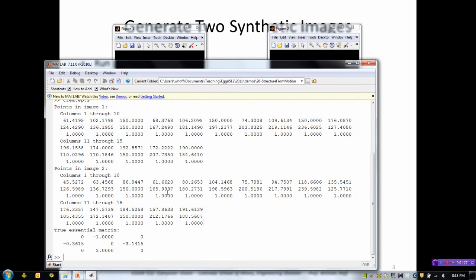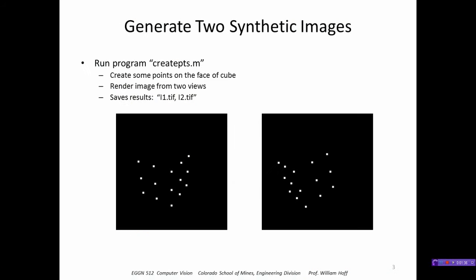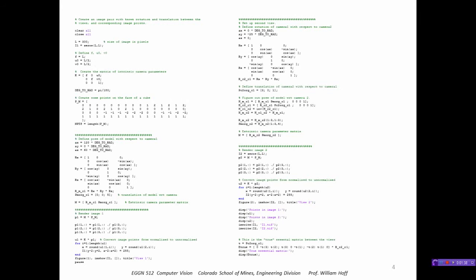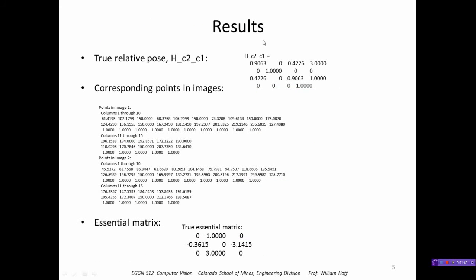Here are the corresponding points, 15 points in each image, and this is the true essential matrix because I knew in this case the actual translation and rotation between the two views. This is the program and these are the results it generated—the true pose from camera two to camera one, the corresponding points between images one and two, and the true essential matrix.